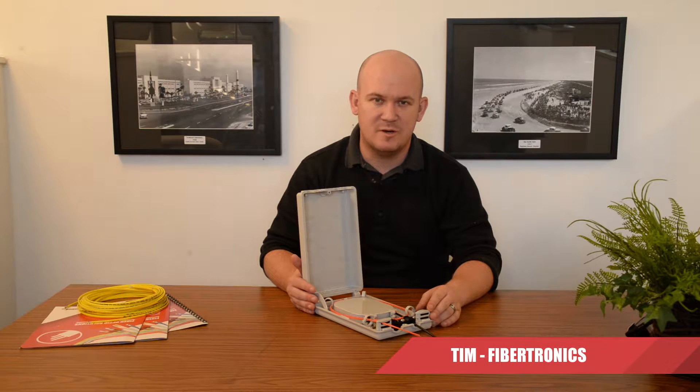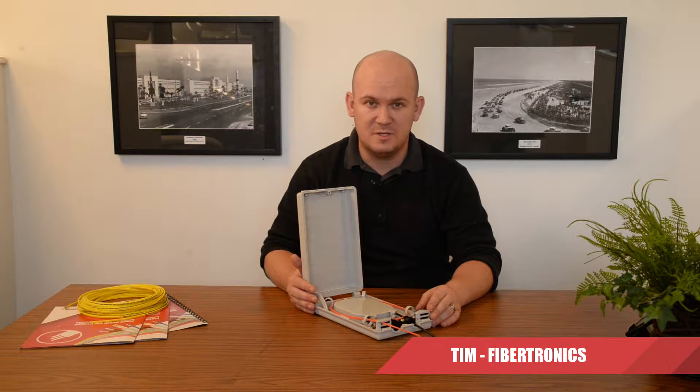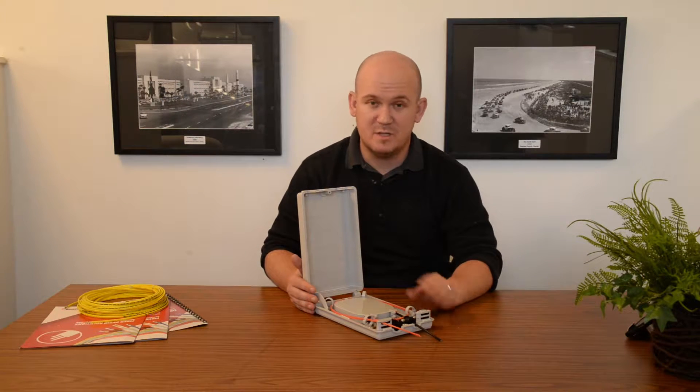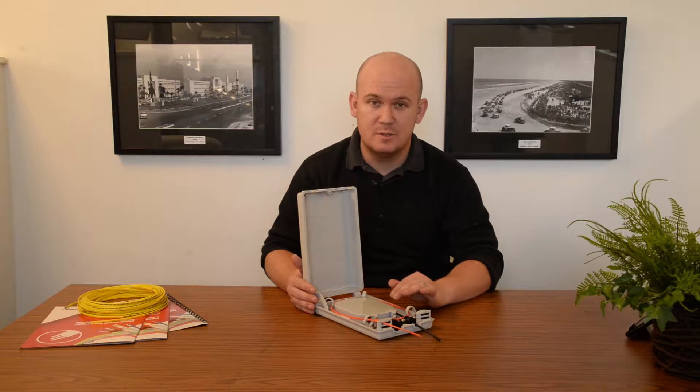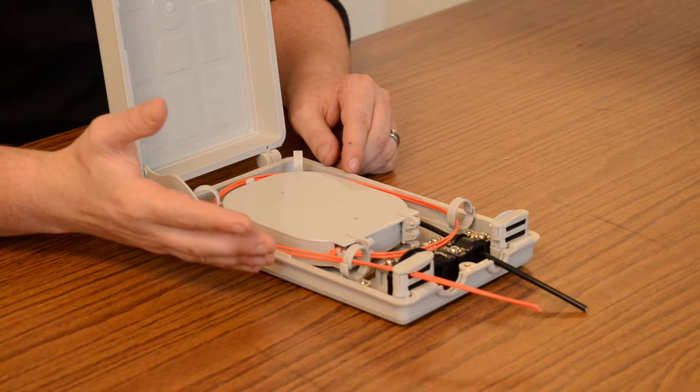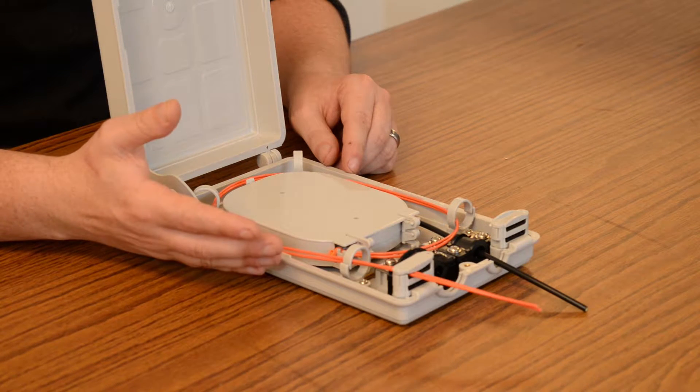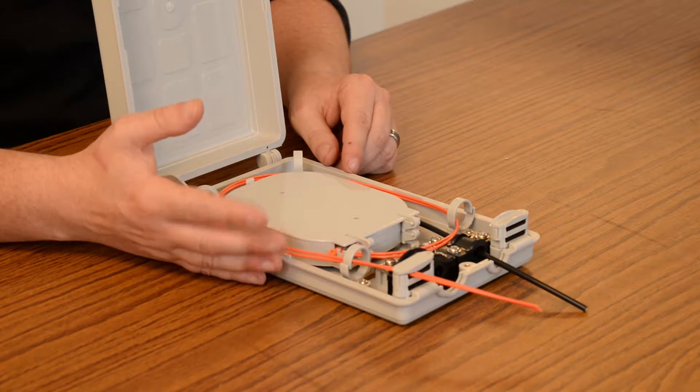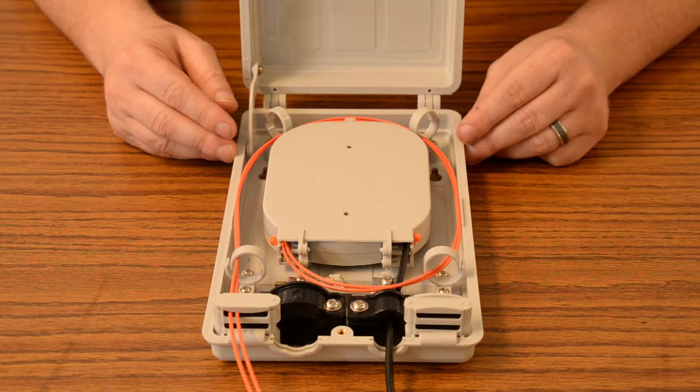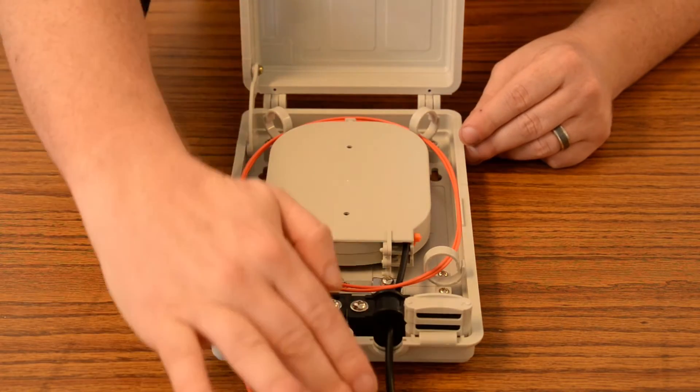Hey guys, this is Tim at Fibretronics. Today we're checking out another wall mount termination box. This one is a 12 fiber, two port, two tray. You'll primarily find this box within network equipment server rooms and used within the telecommunications industry. Let's take a look at inside the box itself.